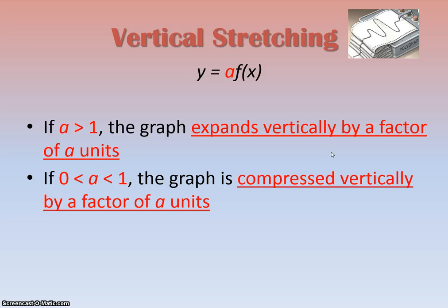It's the exact same rules that we've seen for parabolas in the past. Your a value, if it's greater than 1, is a vertical expansion by a factor of a. If it's between 0 and 1, then it's a vertical compression by a factor of a units. Now if it's less than 0, a negative number, it's not only a vertical expansion, but also a reflection.